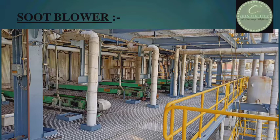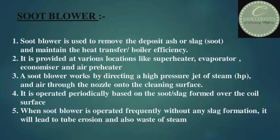What is a soot blower? Look at the figure. There are something in green color — this is the soot blower. Soot blower is used to remove the deposited ash or slag, which is also known as soot, and maintain the heat transfer or boiler efficiency. It is used at various locations like superheater, evaporator, economizer and air preheater. A soot blower works by directing a high-pressure jet of steam and air through the nozzle onto the cleaning surface. It is operated periodically based on the soot or slag formed over the coil surface.